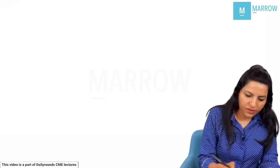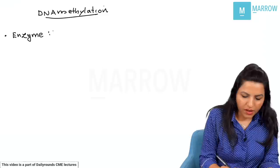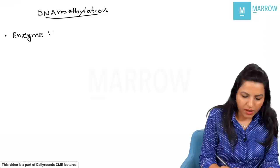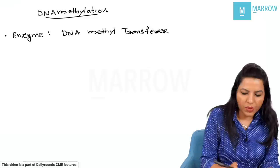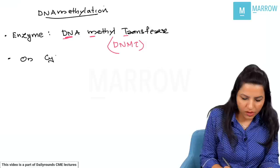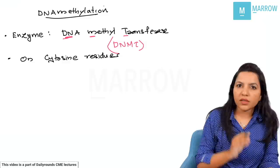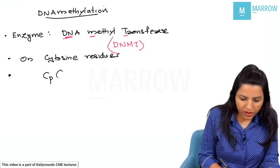Now we look at DNA methylation. The enzyme that methylates the DNA is DNA methyltransferase, abbreviated as DNMT. DNA methylation usually happens on the cytosine residues, and these cytosine residues are usually present in CpG islands.